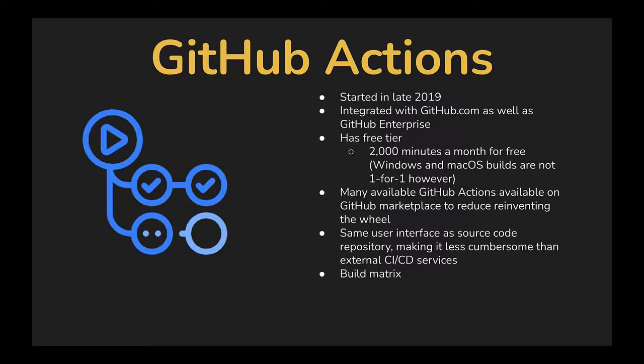First up we're gonna go over GitHub Actions. GitHub Actions started back in late 2019, so they're pretty new to the CI/CD platform space. They are integrated directly into github.com as well as GitHub Enterprise. They do have a free tier which offers 2,000 minutes a month for free when using Linux builds. They do offer Windows and macOS builds, but those use more minutes per build minute than Linux.